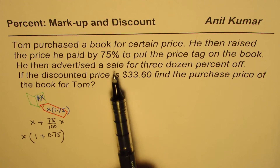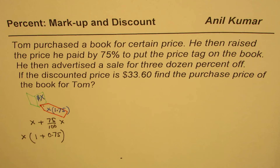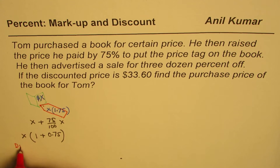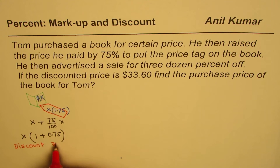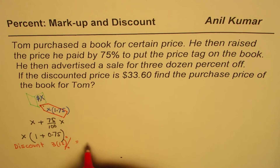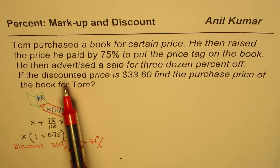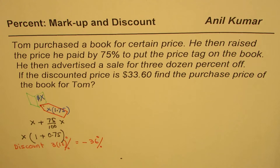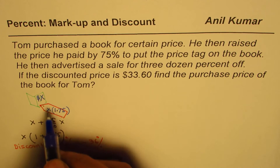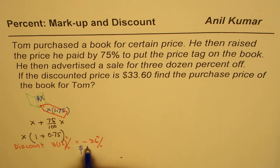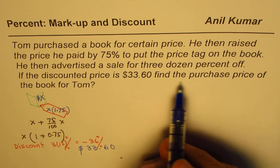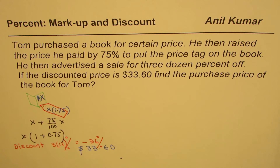He then advertised a sale for 3 dozen percent. So 3 dozen percent means a discount. 3 dozen means 3 times 12 percent — that is the sale discount, which is to say, take away 36%. If the discounted price is $33.60, this price after discount is $33.60.